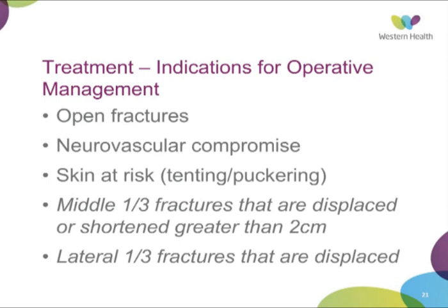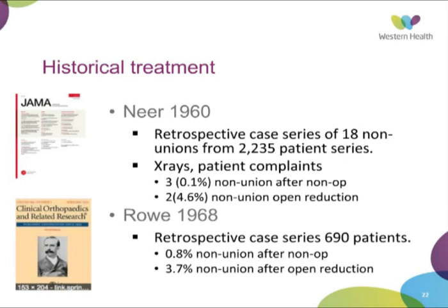Historically, we've been pushed more towards non-operative management because of perceived excellent results from large-scale studies. Neer in 1960 reported on a case series of over 2,000 patients — a retrospective review of their hospital records with 18 non-unions identified. They tried to establish risk factors, finding fewer non-unions after non-operative management and more after operative management, quoting an overall non-union rate of 0.1%.